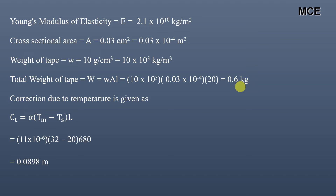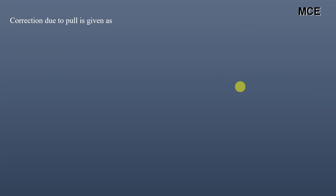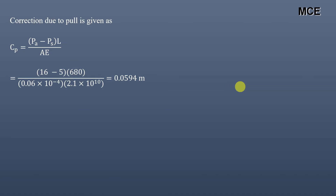The correction due to pull is: Cp = (PA − PS) × L / (A × E). Substituting values: (16 − 5) × 680 / (0.03×10⁻⁴ × 2.1×10¹⁰) = 0.0594 meters. This correction is positive, like the temperature correction.